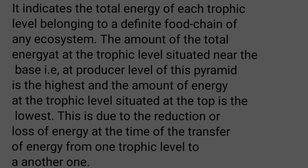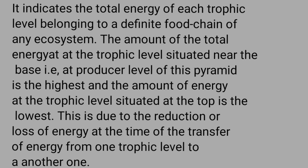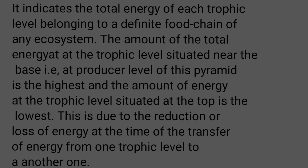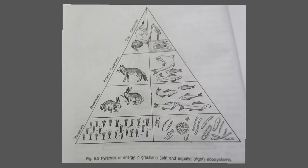The amount of energy at the trophic level situated at the top is the lowest. This is due to the reduction or loss of energy at the time of transfer of energy from one trophic level to another. For example, only 20 percent of the total solar energy is utilized by green plants during photosynthesis.